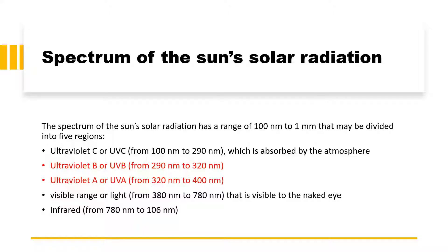Let us first try to understand the spectrum of solar radiation. Solar radiation has been divided into five major regions: ultraviolet C, ultraviolet B, ultraviolet A, visible range, and infrared range. Since we are here to discuss sunscreen, we are particularly interested in two ranges: UVB, which ranges from 290 to 320 nanometers, and UVA, which ranges from 320 to 400 nanometers.